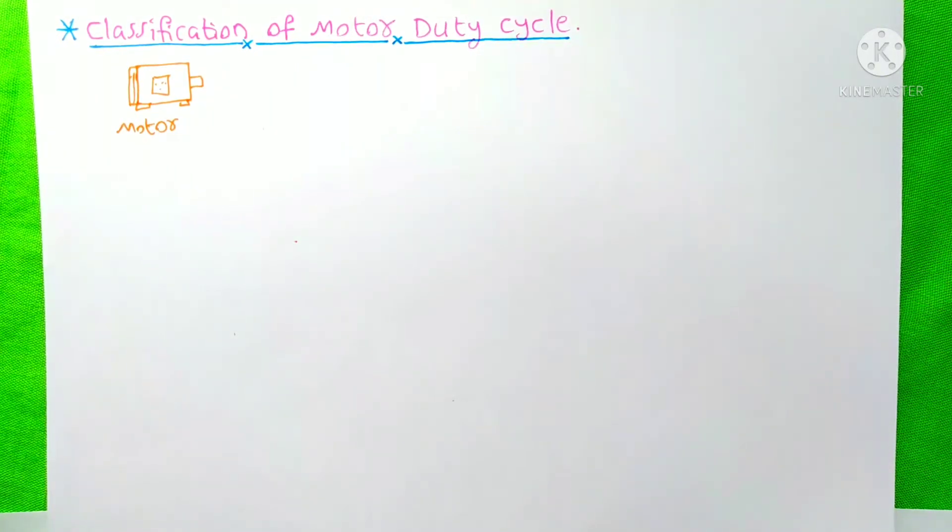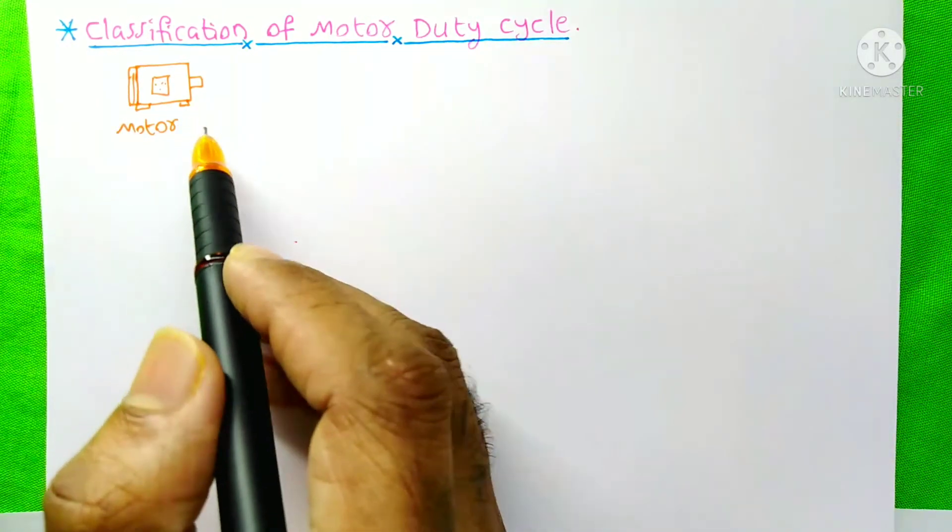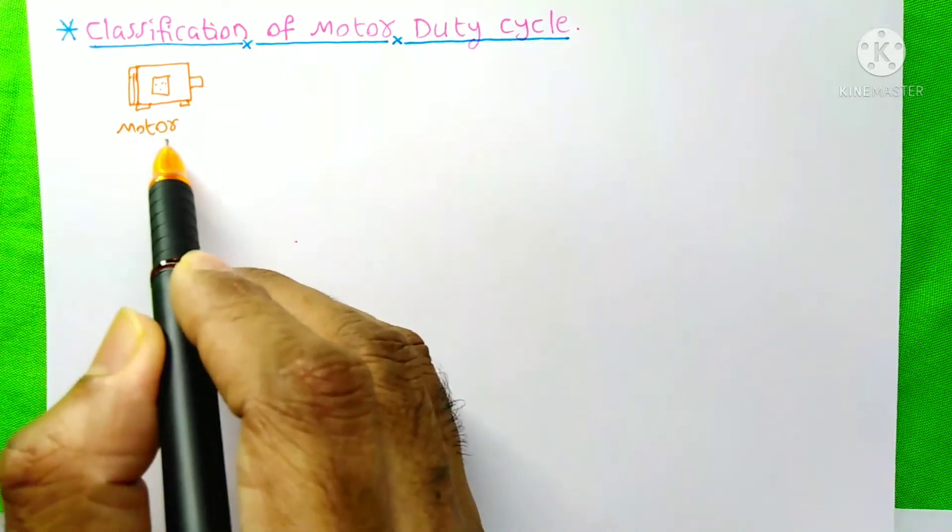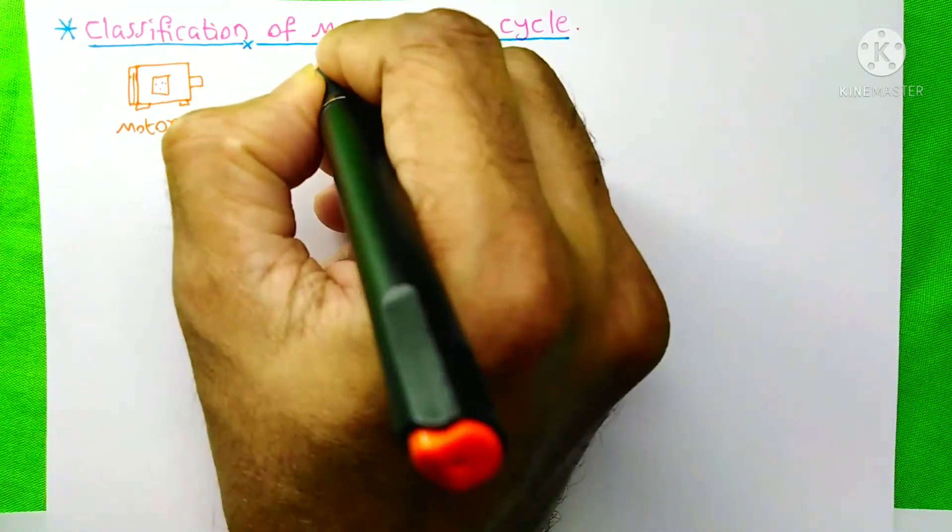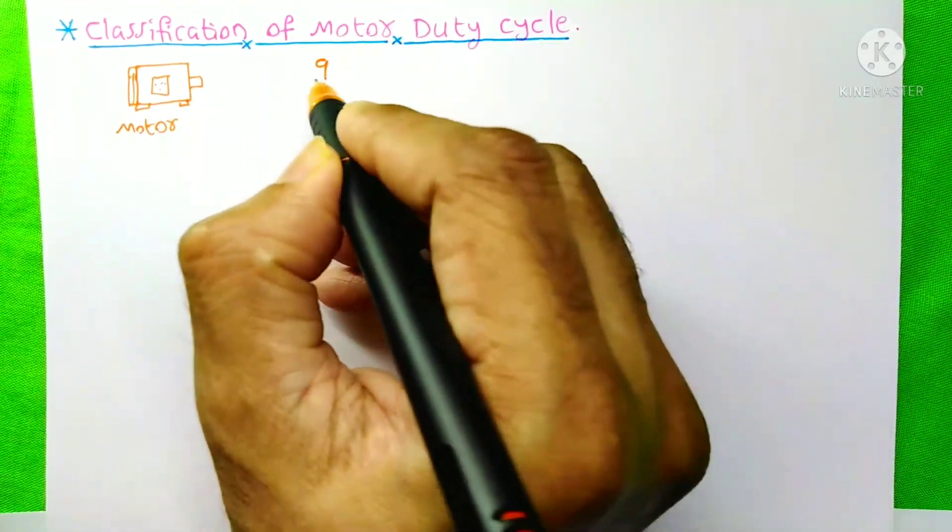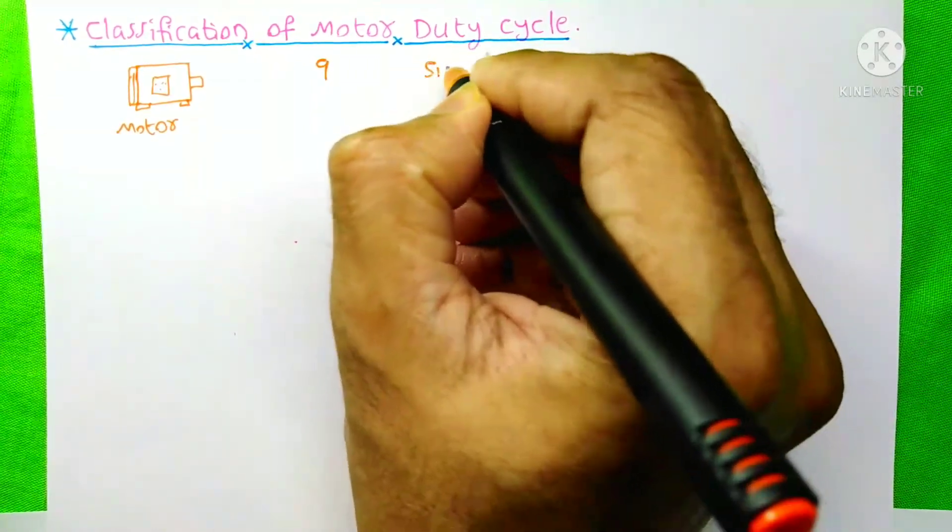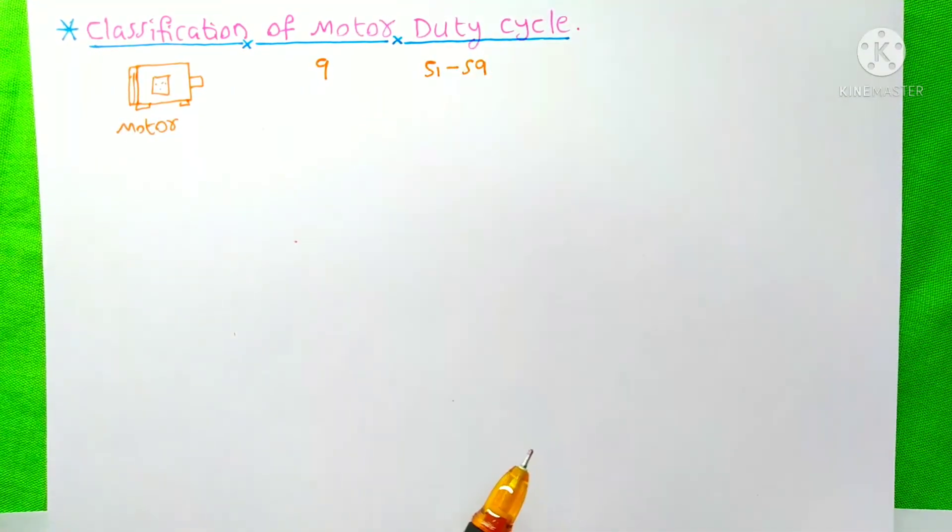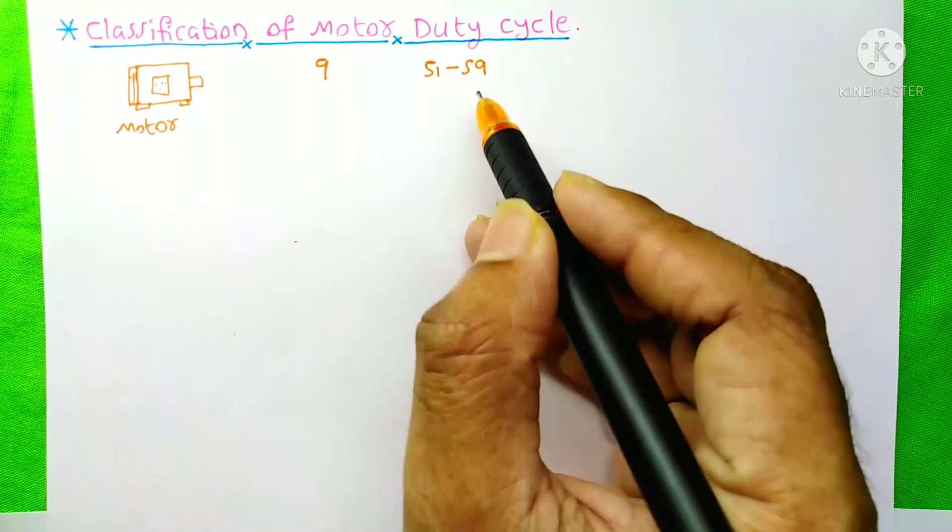Today I am going to discuss with you about classification of motor duty cycle. There are 9 different motor duty cycles from S1 to S9. I am an electrical engineer. To learn about this, please don't skip this video till its end.